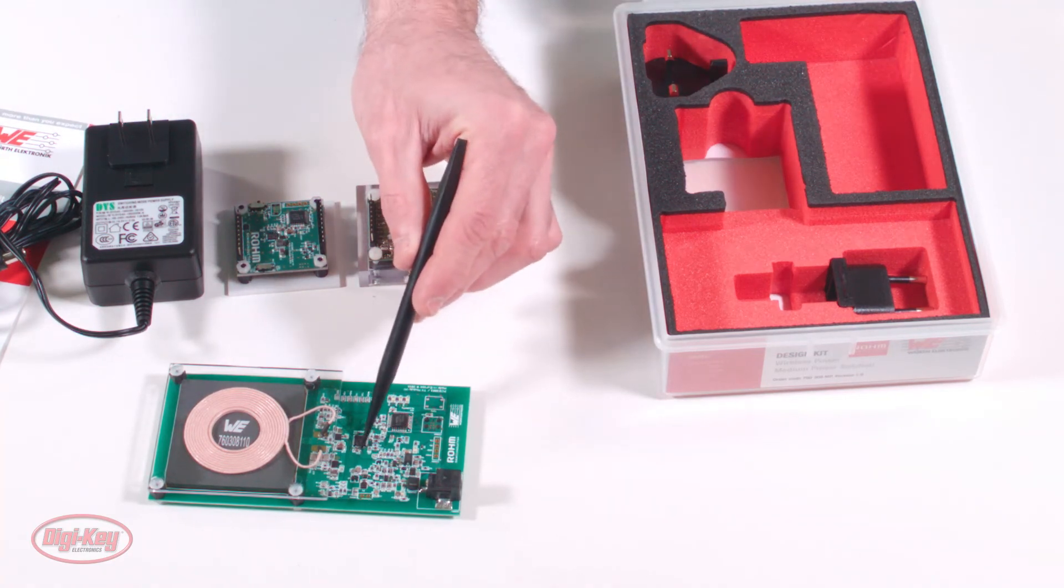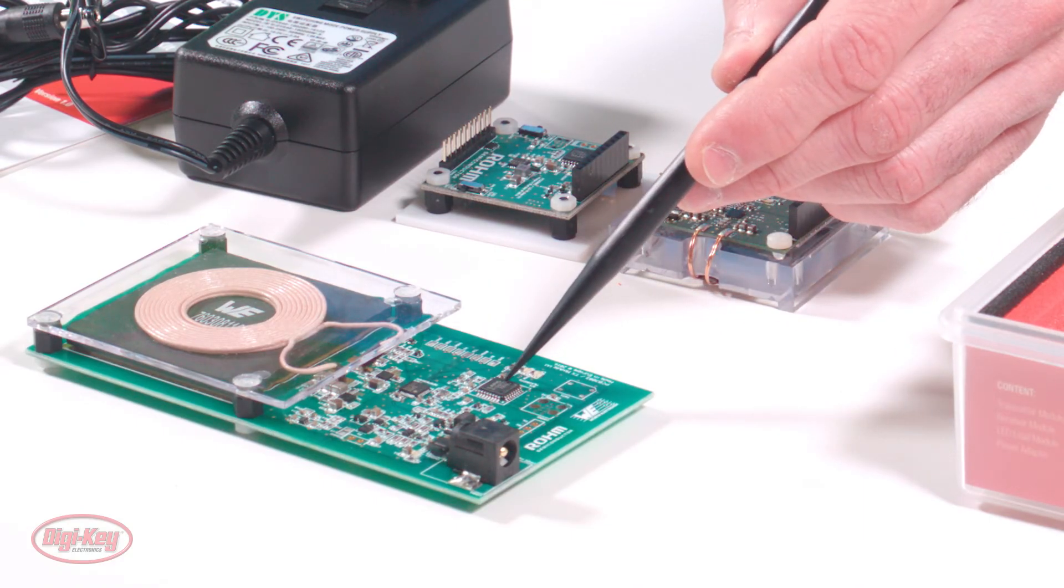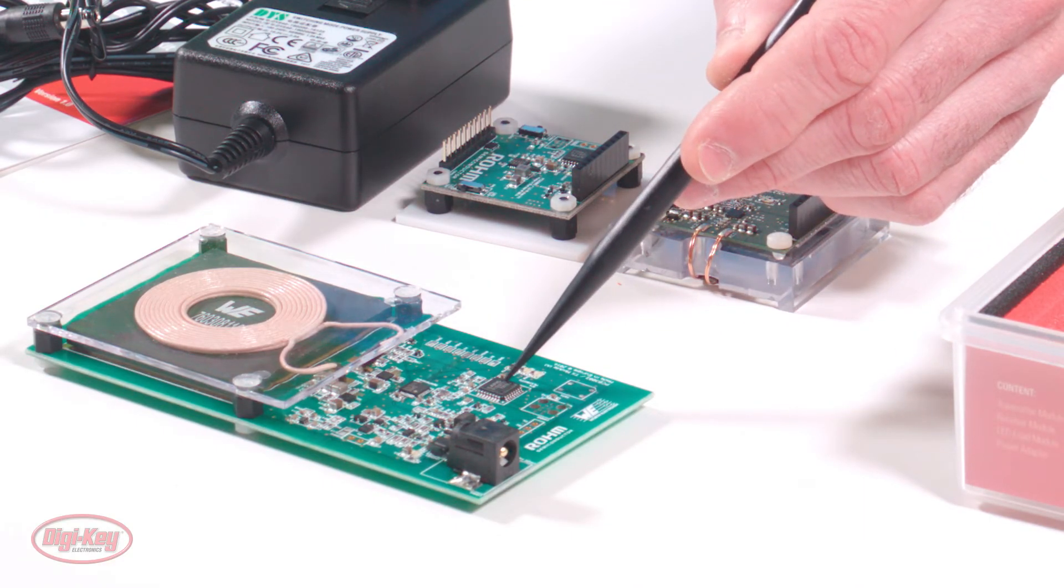The transmitter IC contains all the necessary analog functions required for wireless charging, and a microcontroller is required for digital and signal control.